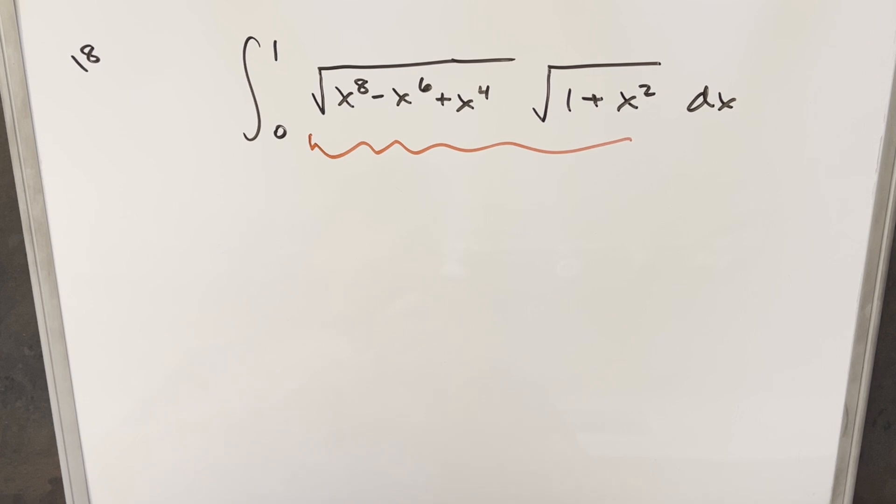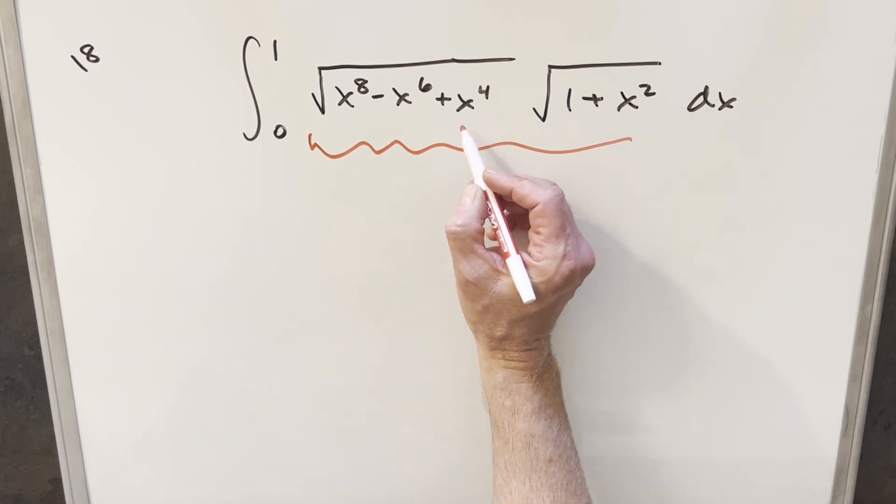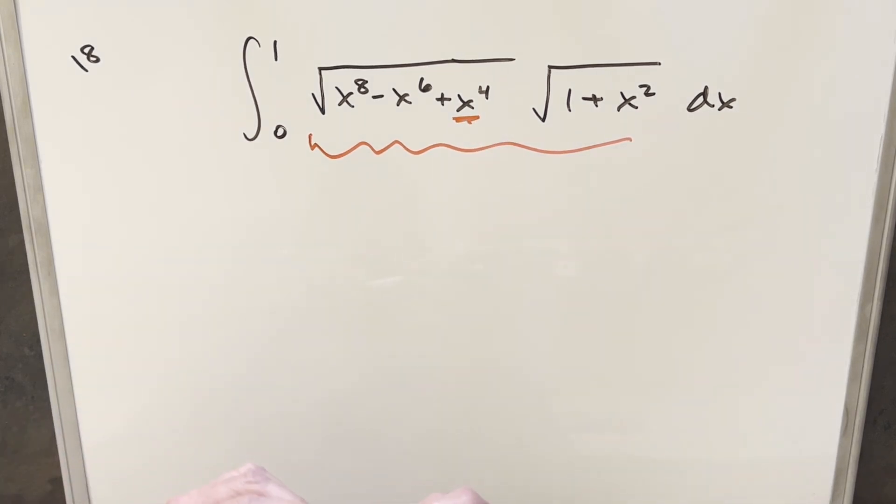I think there's definitely a few different ways we could simplify it. I think the first thing I want to notice though, we've got an x to the 4th here that we could factor out of this. So I think I'll actually start with that.